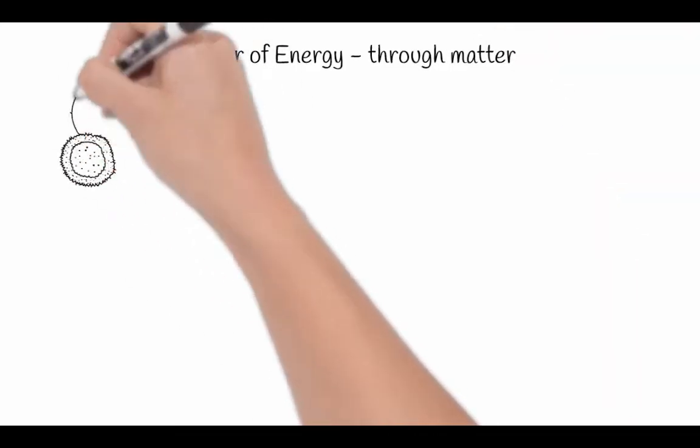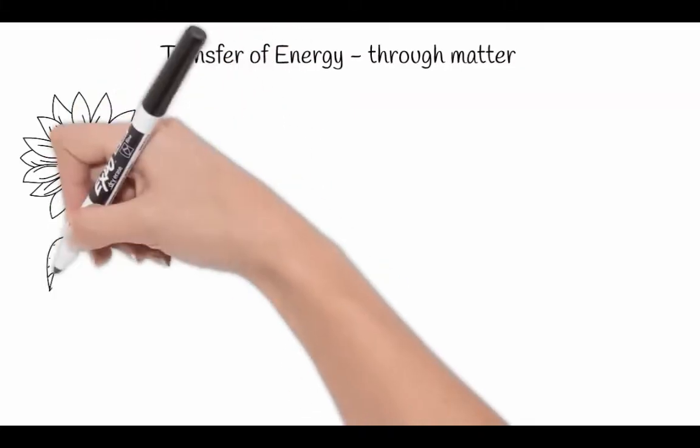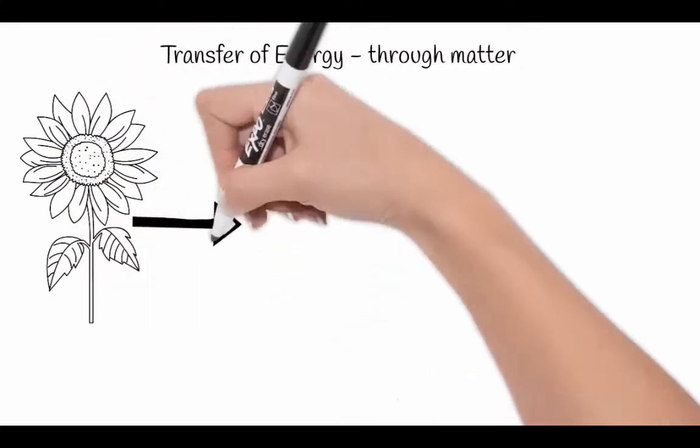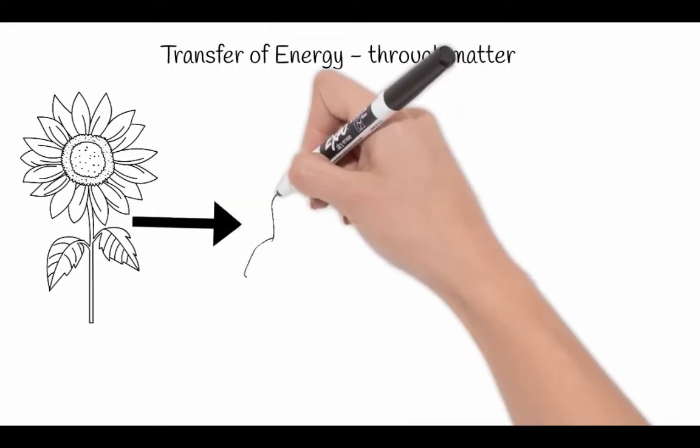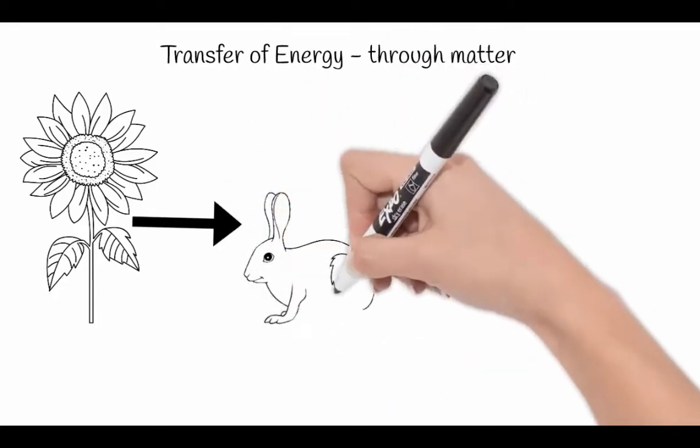So the energy from the sun makes its way to the plant that helps the plant make food through photosynthesis. And then when a small herbivore comes and eats the plant, the energy is transferred from the plant to that animal.